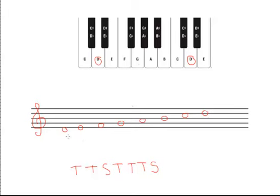So let's draw in our tone-semitone pattern just to clarify what we mean here. The distance between the first two notes should be a tone. The distance between the next two notes should be a tone as well. Between the third and fourth note we have a semitone. Going forward we have tone, tone, tone, and ending with a semitone.